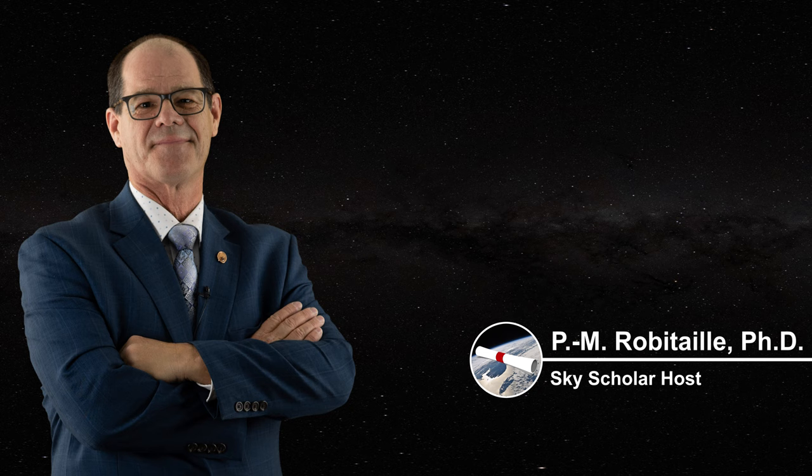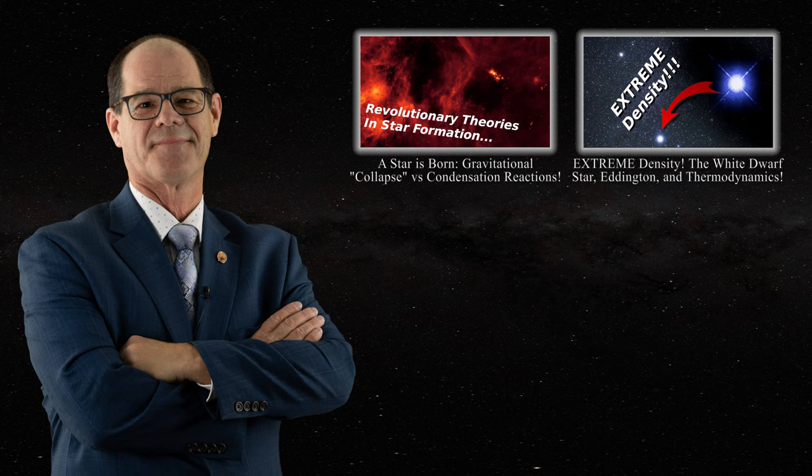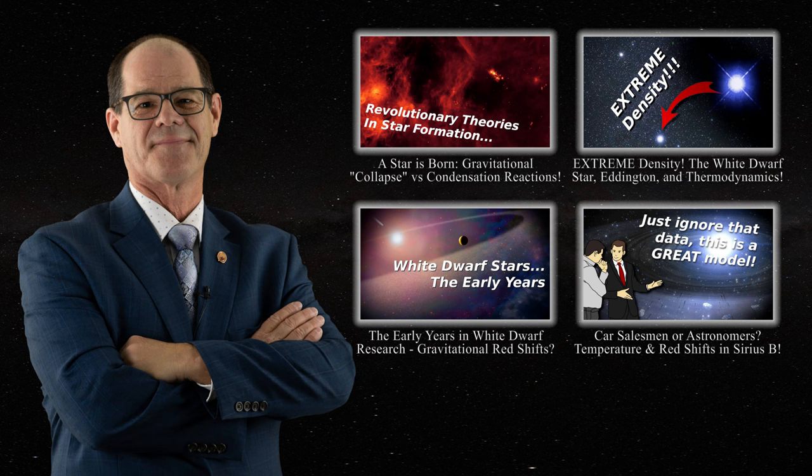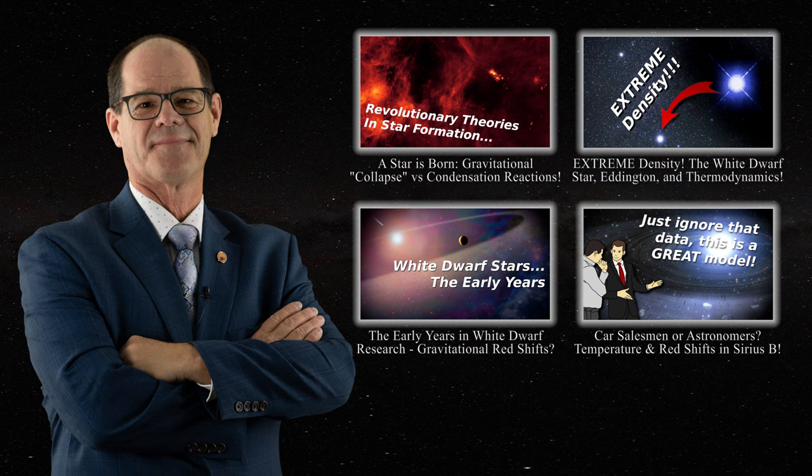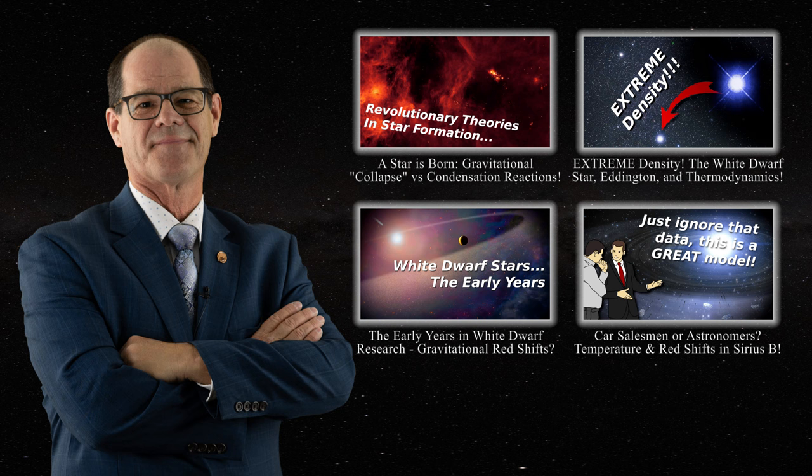Hello everyone and welcome to SkyScholar. Today we continue our series on white dwarf stars. The first two videos discuss the inability of ideal gases to gravitationally collapse to form a star or a white dwarf. The next two videos analyze the concerning use of gravitational redshifts, especially revealing problems with determining the temperatures of Sirius B. We are now left with the gravitational redshift as the only possible means of determining the radius of a white dwarf star.